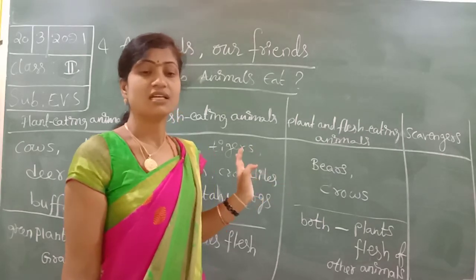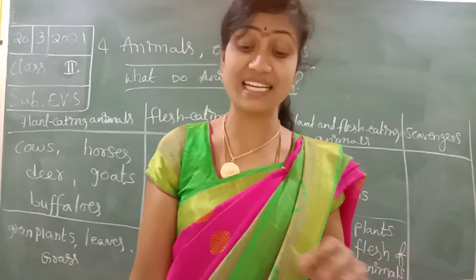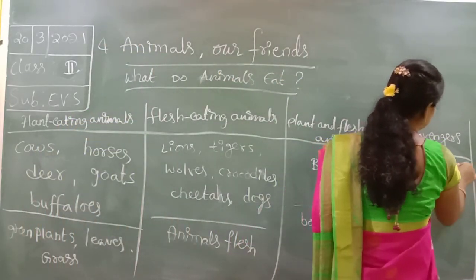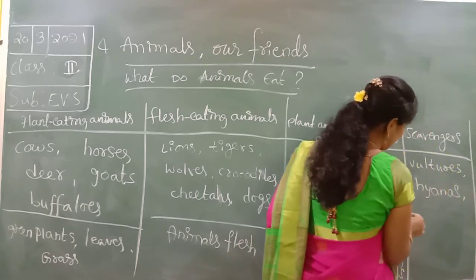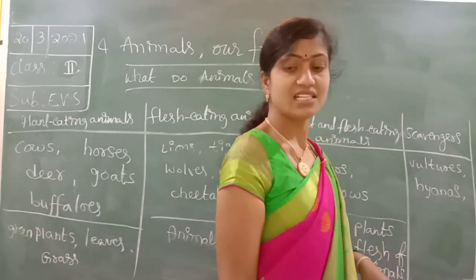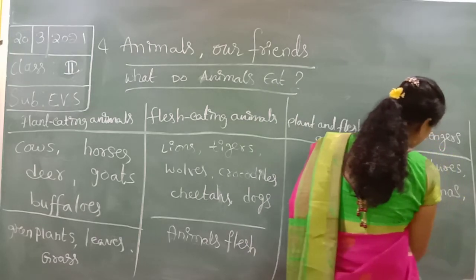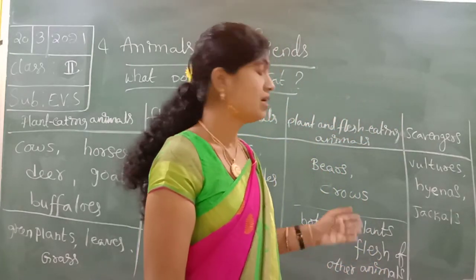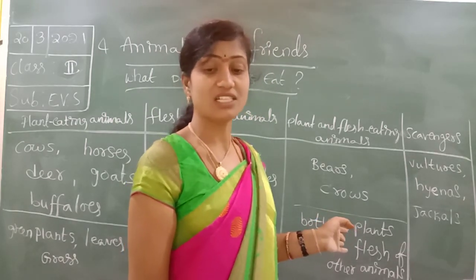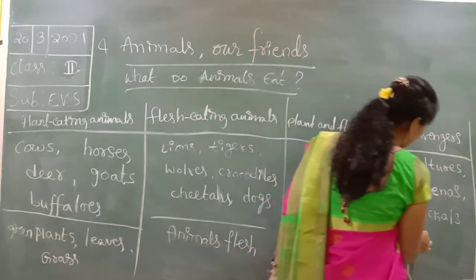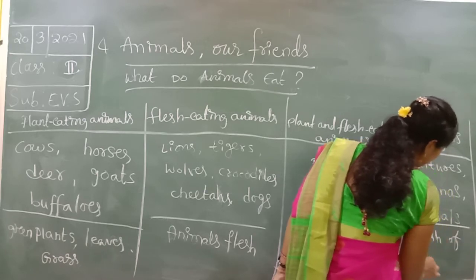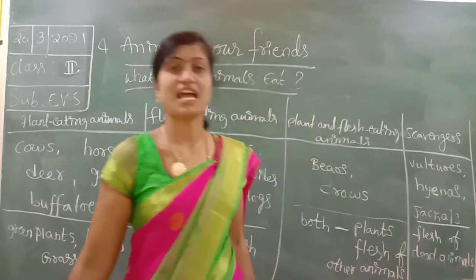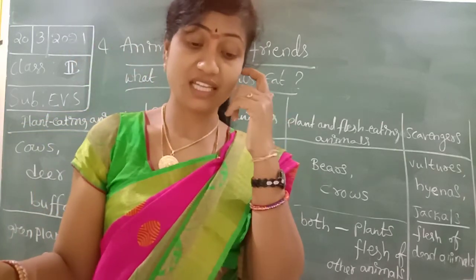Scavengers eat dead animals. Vultures, hyenas, and jackals are scavengers. They eat the flesh of dead animals - they are called scavengers.